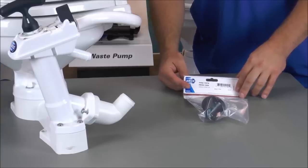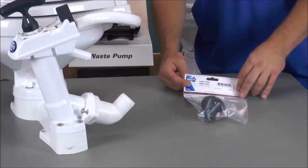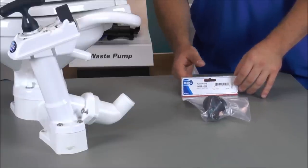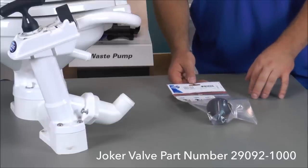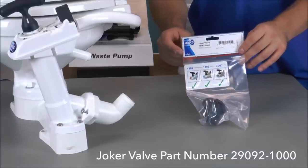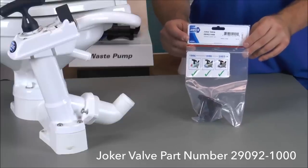Now what you'll need for this repair are four things: a flathead screwdriver, a pan, a pair of gloves, and a joker valve, which has a part number of 29092-1000. Again, the part number you'll need for the joker valve is 29092-1000.